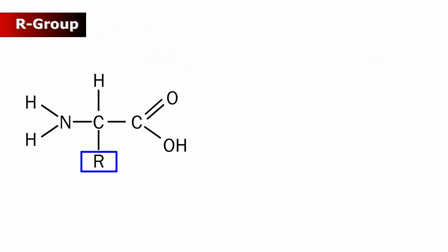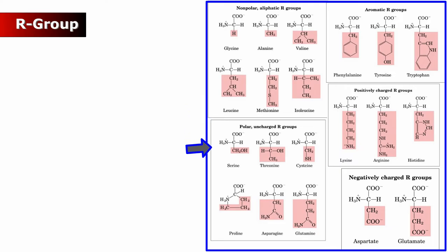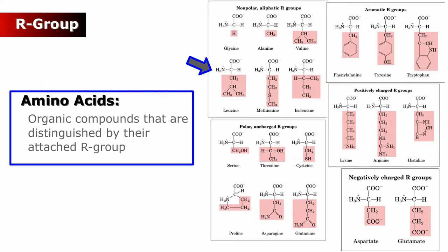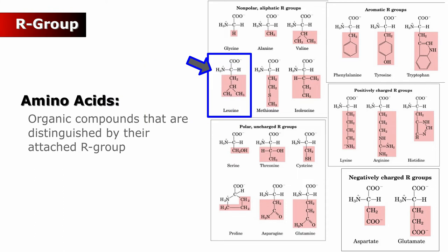Differences in the R group identify the various amino acids. Amino acids are organic compounds that are distinguished by their attached R group.